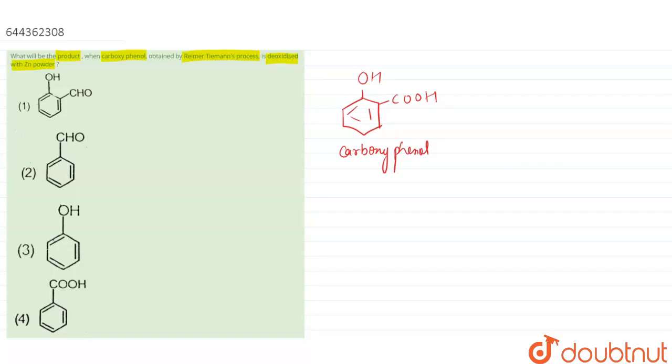It is being asked that when this carboxyphenol, which is obtained by Reimer-Tiemann process, is deoxidized or you can say reduced by zinc powder in presence of heating, what will be the product of it?